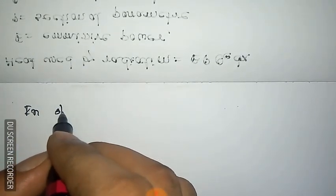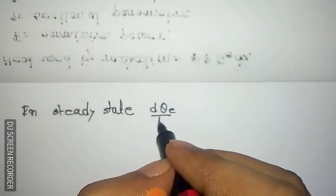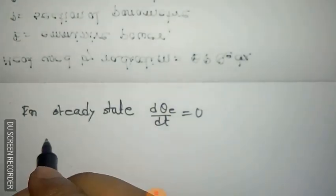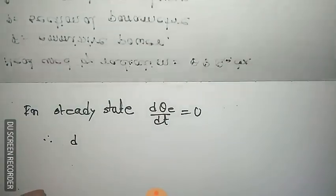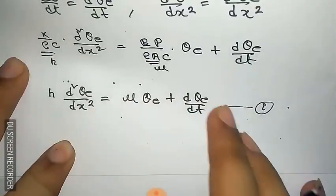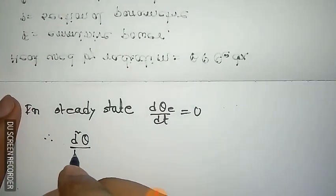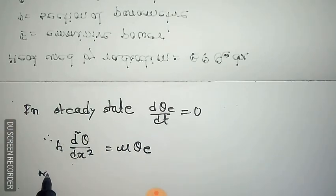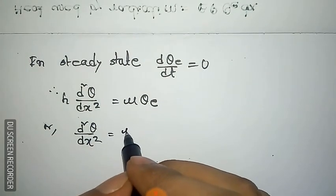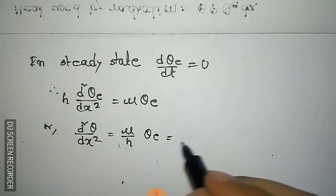For the steady-state condition, when all heat transfer has stopped and the system reaches steady state, d/dt = 0. Putting d theta / dt = 0 into equation number 1, we get: h (d² theta_e / dx²) = mu theta_e, or d² theta_e / dx² = (mu / h) theta_e. We assume mu / h = m².